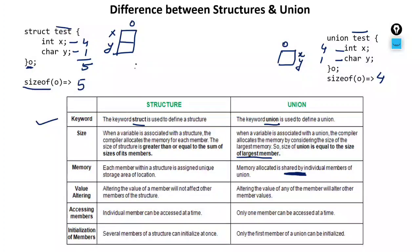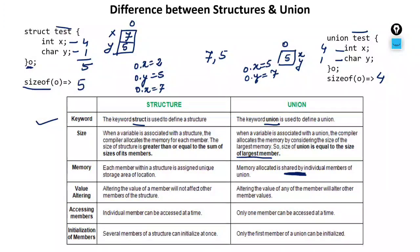Fourth difference — value altering: if you write o.x = 2 and o.y = 5 in a structure, then change o.x = 7, you get x = 7 and y = 5 — altering one member does not affect others. But in a union, since x and y share the same memory, if o.x = 5 and o.y = 7, printing both x and y gives 7 for both — the last updated value remains for all members. Altering any member in a union changes the value seen by all members sharing that space.